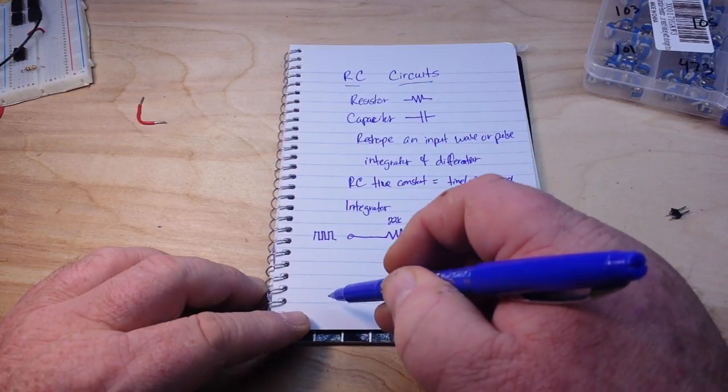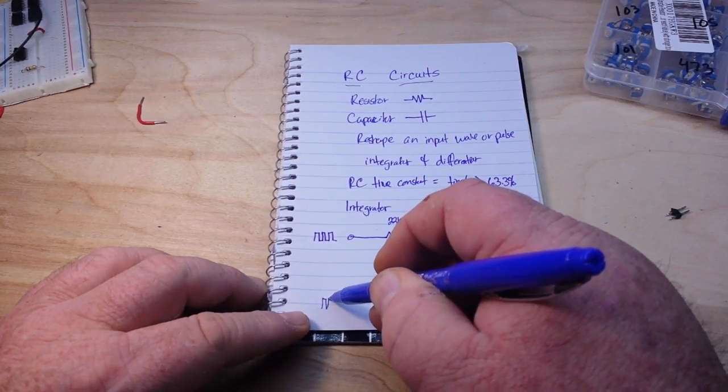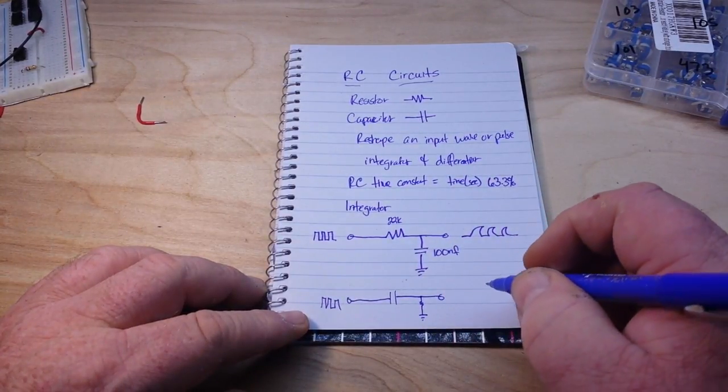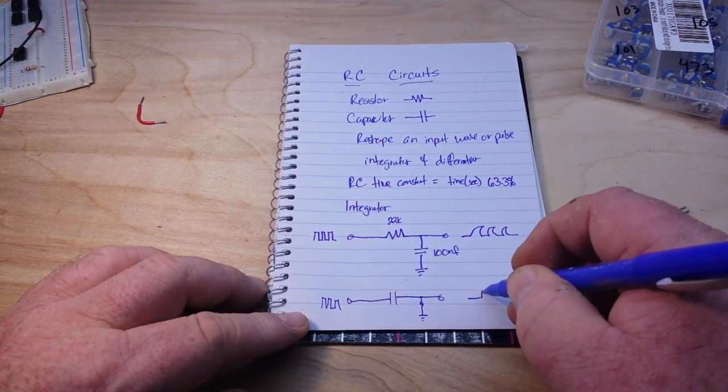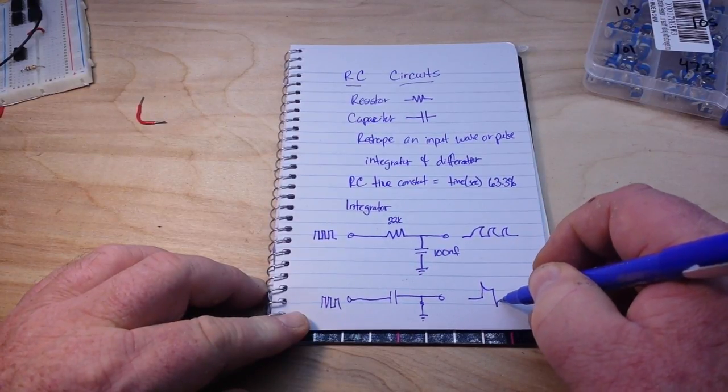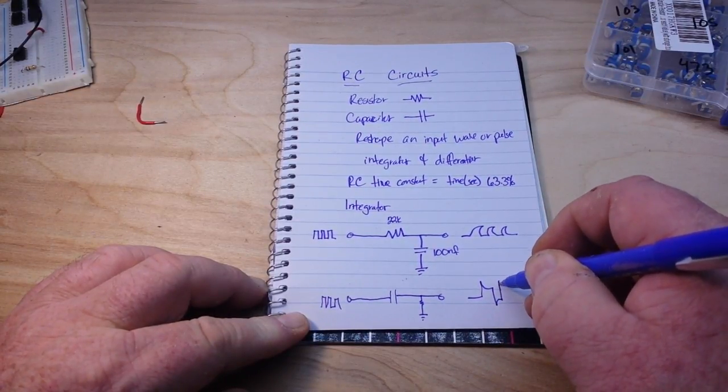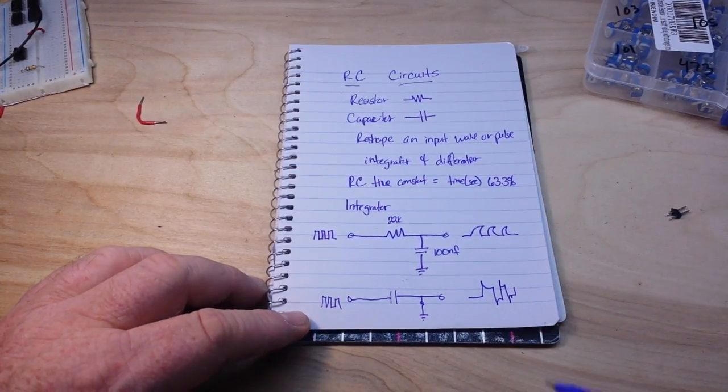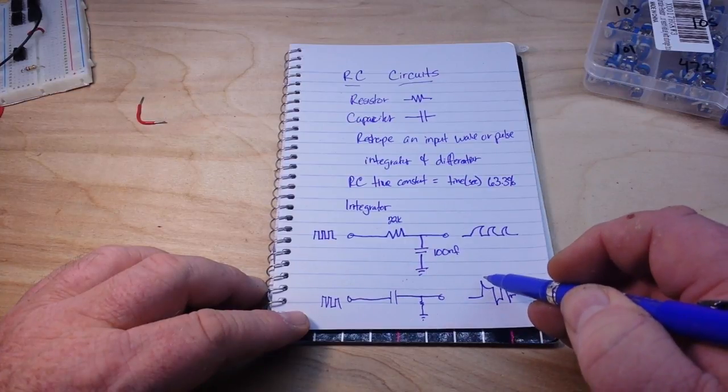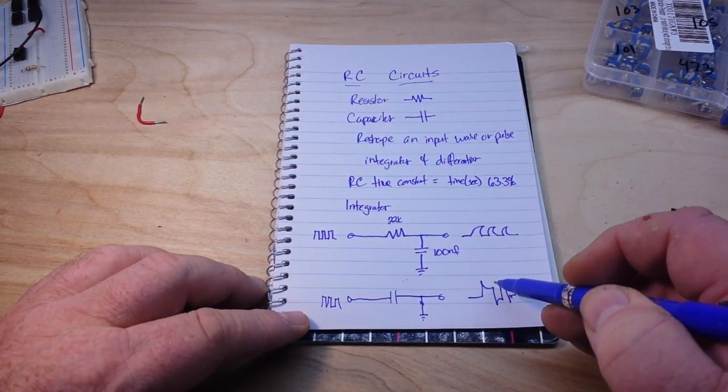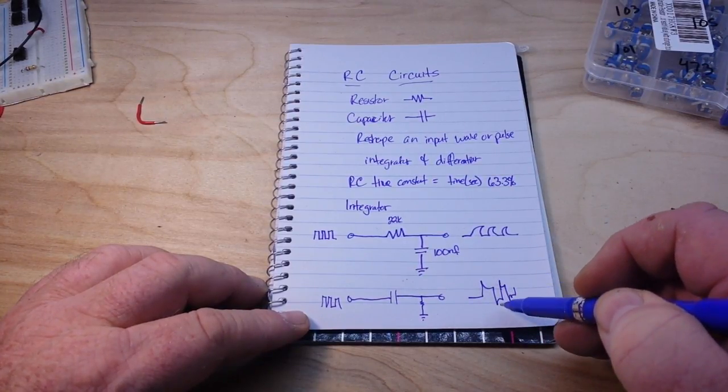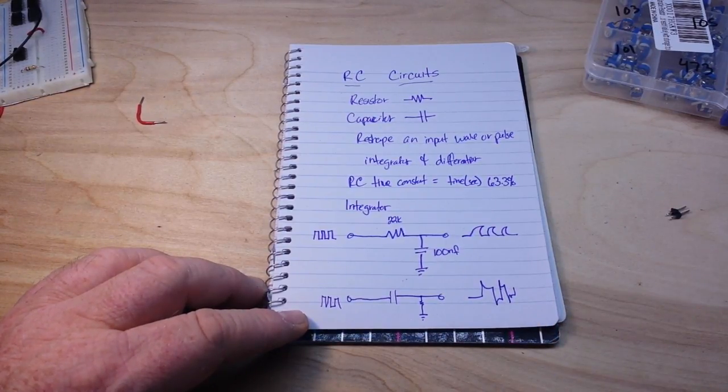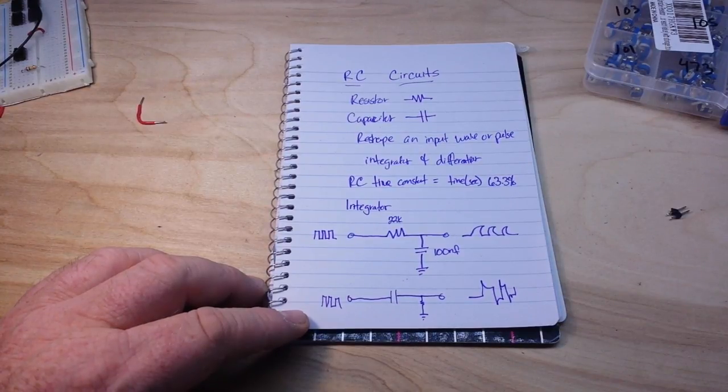We have our square wave coming in over here, and now our output looks different. What we're getting is a waveform with a sharp peak and then the discharge of the capacitor. Sharp peak, charge of the capacitor, and it continues on and on like that.